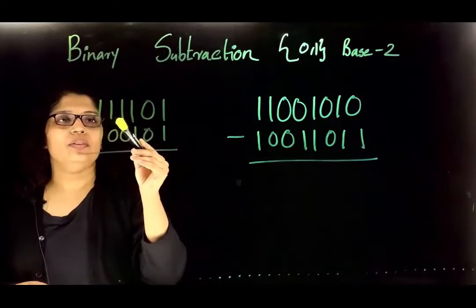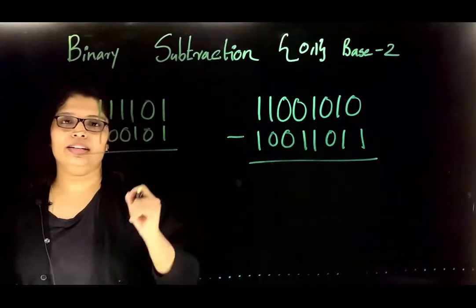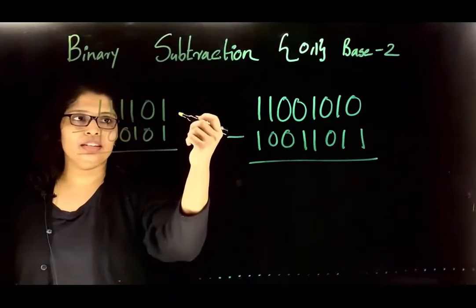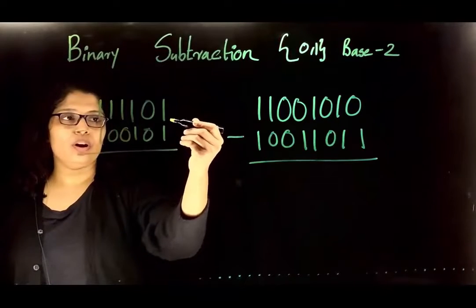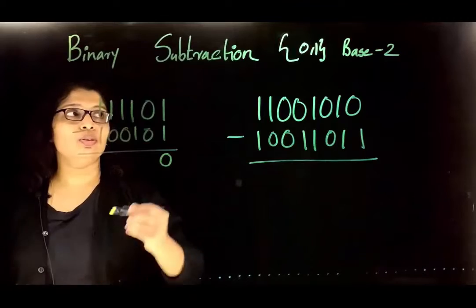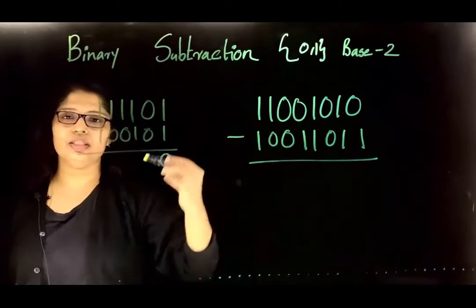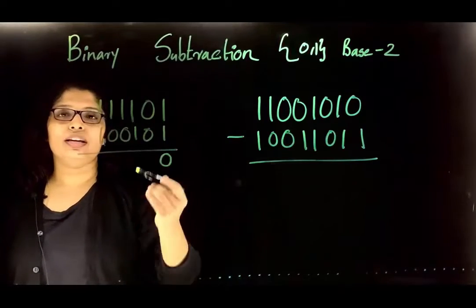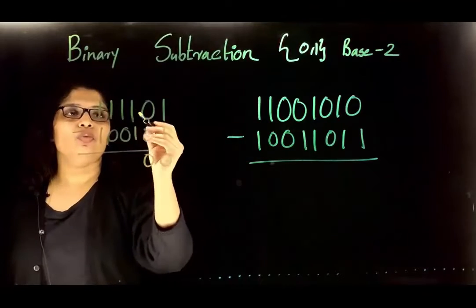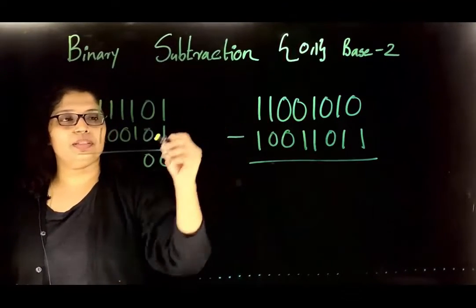Consider the given example for binary subtraction: 111101 minus 100101. Start from the LSB position. Here we have 1 minus 1, which is 0, and the representation in binary system is 0. Again 0 minus 0 is 0, and the representation is 0. Then 1 minus 1 gives value 0, and the representation is 0.